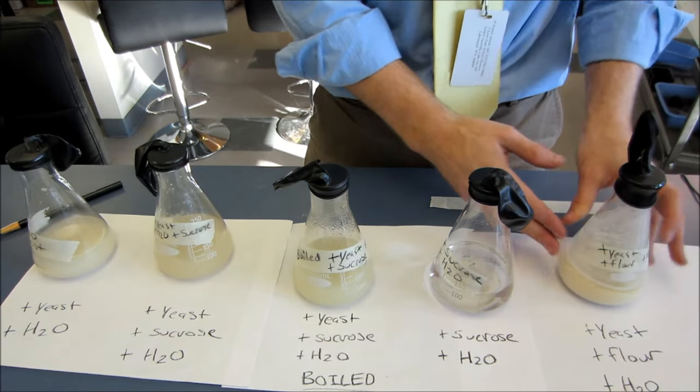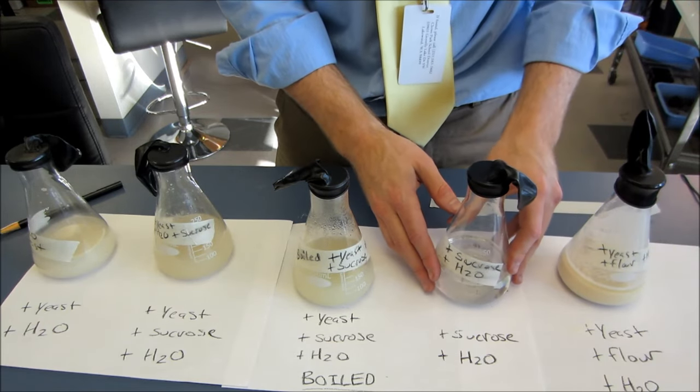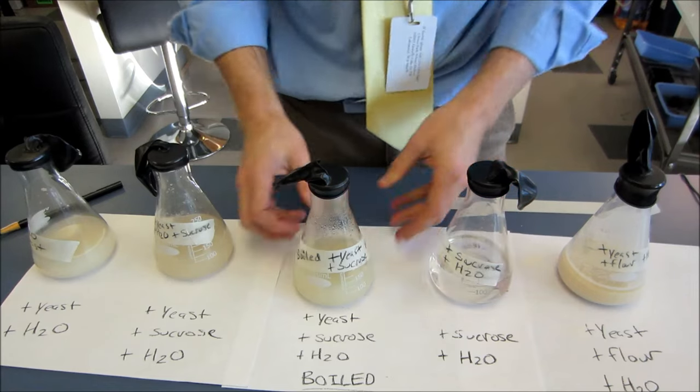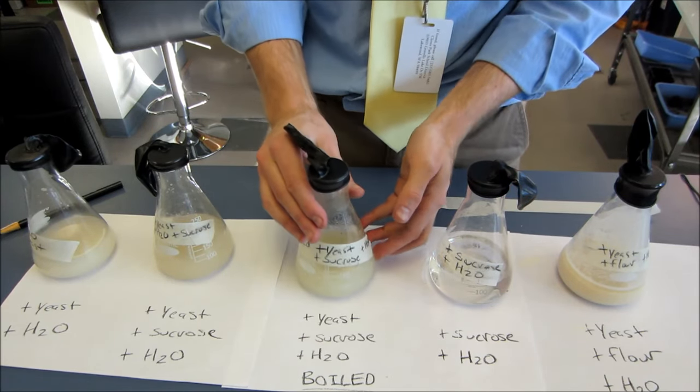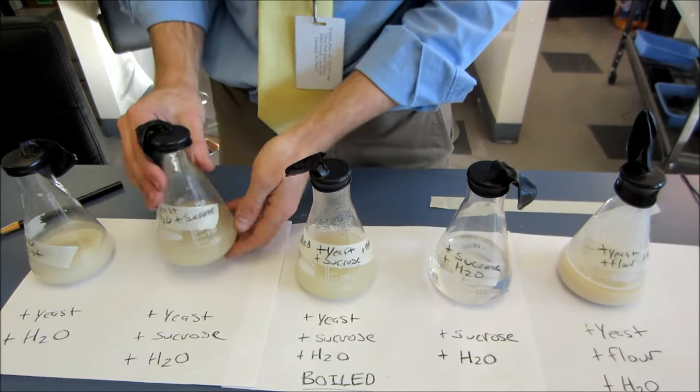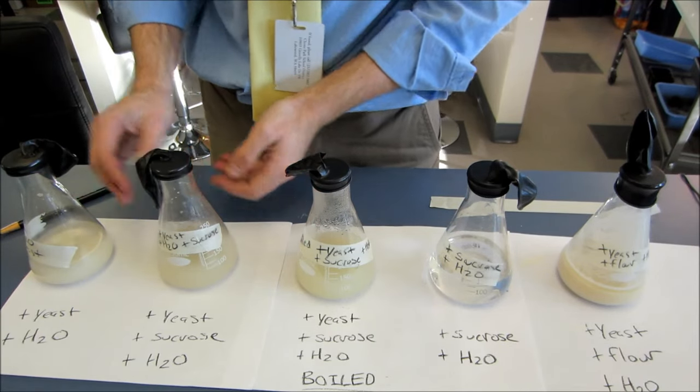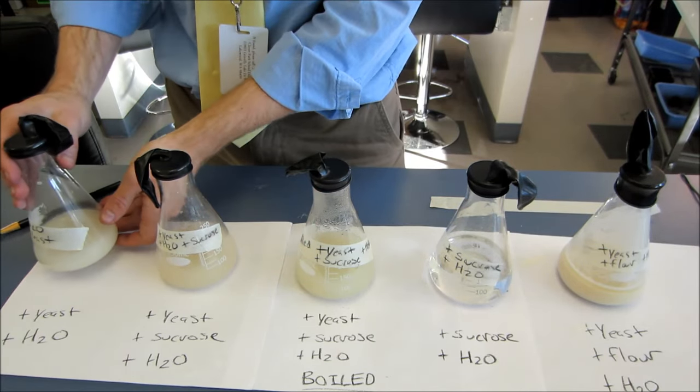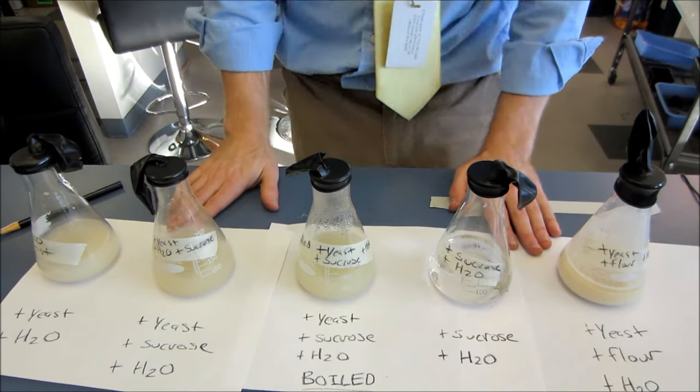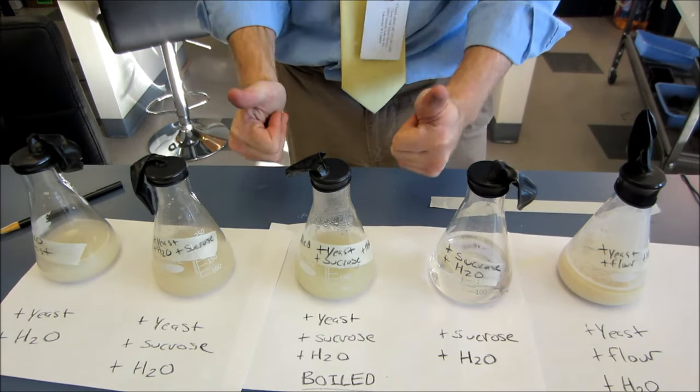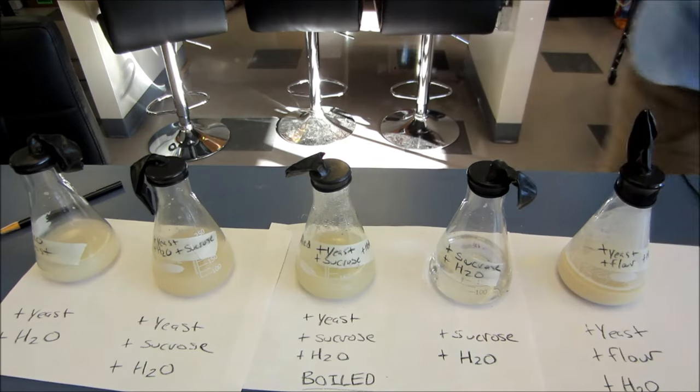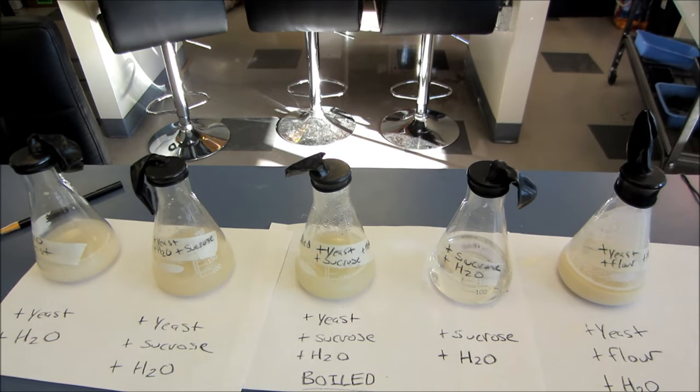Once again, flask number five is yeast, flour, and water. Four is just sugar and water, but no yeast. Three is the yeast, the sugar, the water, and it's been boiled. And two is yeast, sugar, and water. And one is just yeast and water. So those are my five different treatments here. We're going to check in on them in 24 hours. I'd like you to make your hypotheses now. Make sure you have a hypothesis for each of the five treatments.